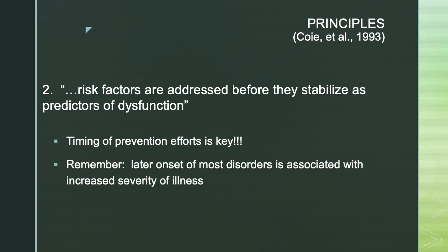The second principle is that risk factors should be addressed before they stabilize as predictors of dysfunction. Timing of your prevention strategies is absolutely essential. In general, later onset of most disorders — particularly in mental health — is associated with increased severity of illness. So in most cases, the earlier we can intervene, the greater our likelihood of promoting significant change. The timing of our prevention efforts needs to be theoretically driven, and earlier is usually better.